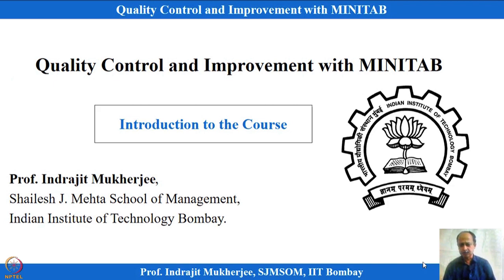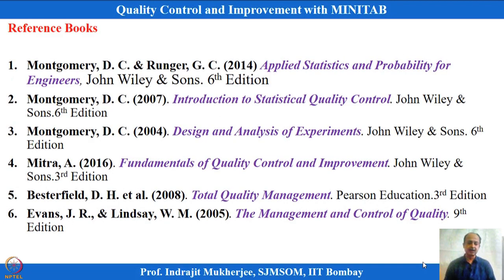I will give a brief introduction to this course and what topics we will cover. But before that, let me highlight the reference books I suggest. One is Applied Statistics and Probability for Engineers by Montgomery and Rungar, then Introduction to Statistical Quality Control also by D.C. Montgomery, then Design and Analysis of Experiments by the same author, then Amitabha Mitra's book on Fundamentals of Quality Control and Improvement, then Westerfield's book on Total Quality Management, and the Management and Control of Quality by Evans. These are the reference books, as some examples we will discuss are taken from these books.